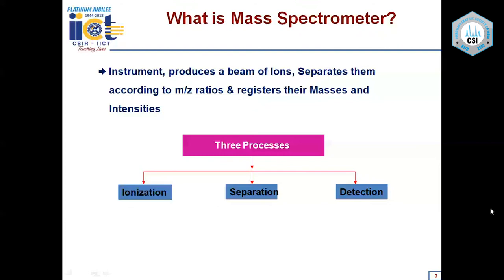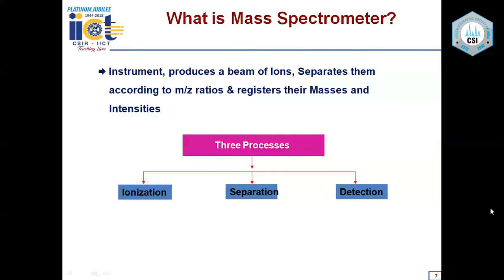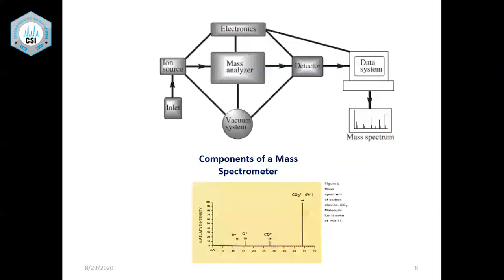A mass spectrometer produces a beam of ions, separates them according to mass-to-charge ratios, and registers their masses and intensities. Three processes take place: first, ionization — neutral molecules are converted to ions; second, ions are separated by the analyzer; and third, they are detected. The inlet is how samples are introduced into the source. Solid samples are introduced using a solid probe with a quartz crucible via a vacuum interlock, since mass spectrometers are maintained at very high vacuum.